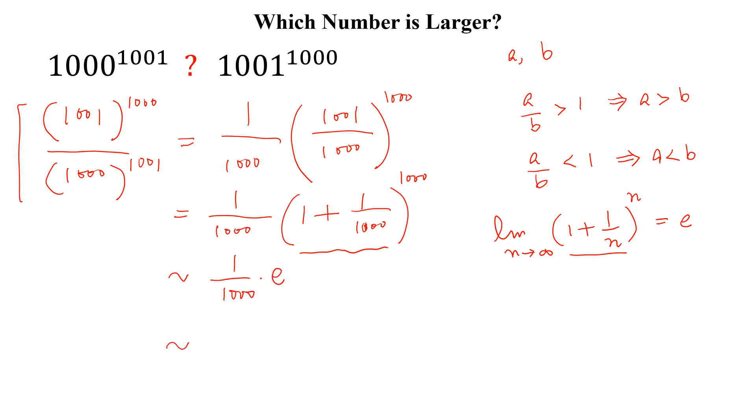And this is approximately equal to 0.00271, and this means 1000 to the power 1001 is greater than 1001 to the power 1000.